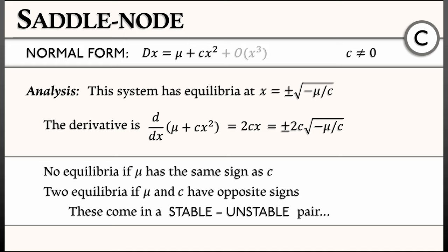And from the derivative, we can see that these come in a stable-unstable pair. The derivative is positive for one, negative for the other. That's the basic analysis of the normal form of the saddle node.